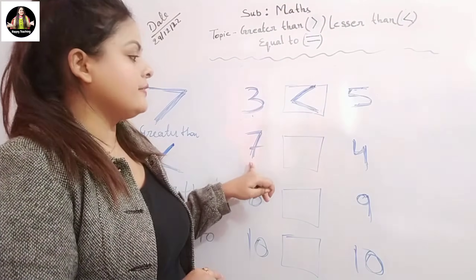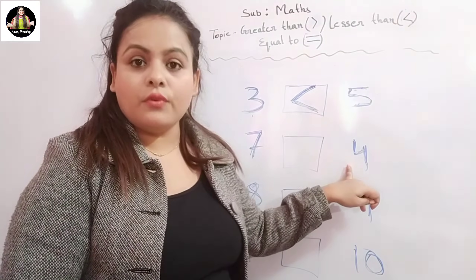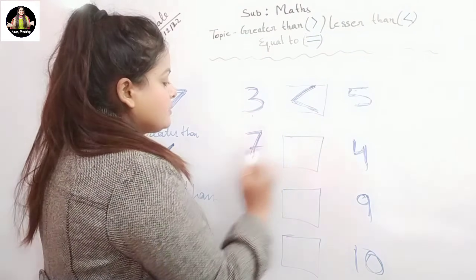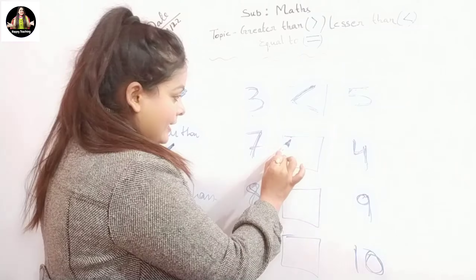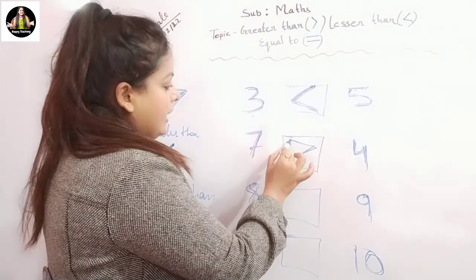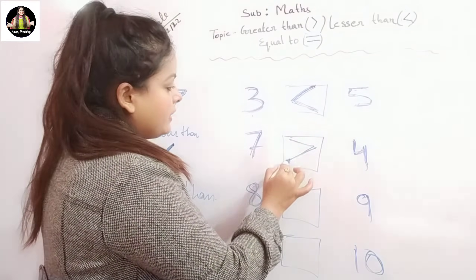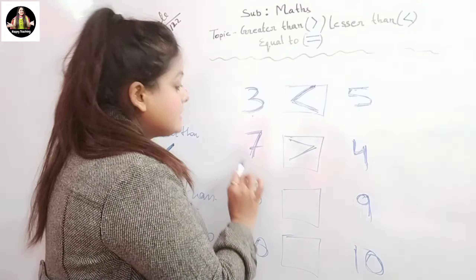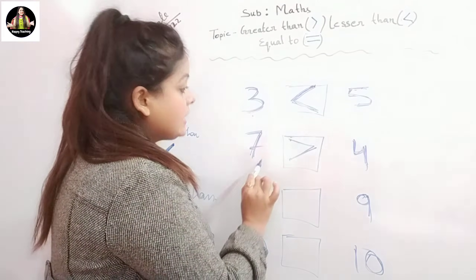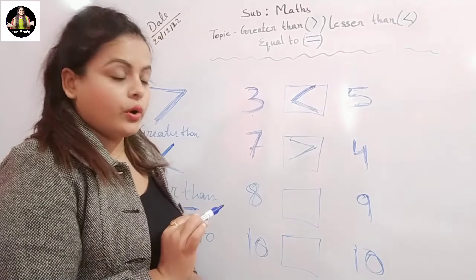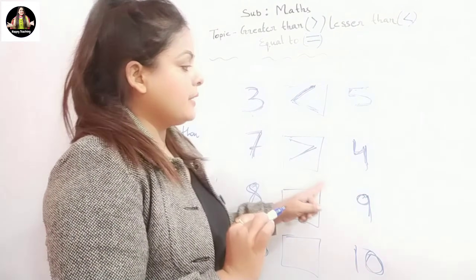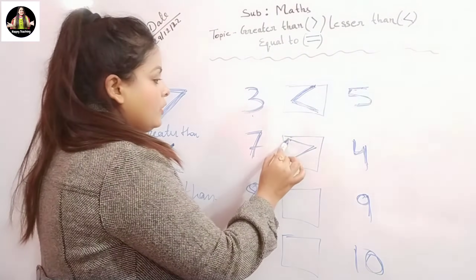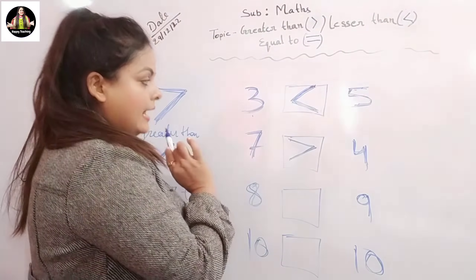Here this side we have seven and this side we have four. So which one is big? Correct — seven is big! The alligator will open his mouth to eat number seven because number seven is bigger than four. So the alligator will open his mouth towards this side.